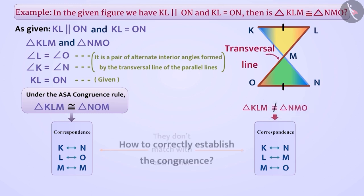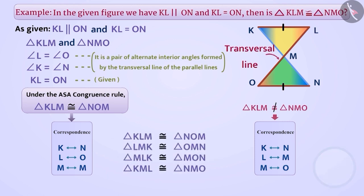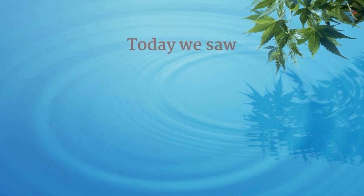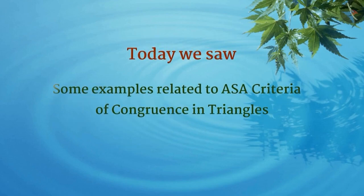Can you tell us how we can write the correct relation of congruence? Think for a while. Absolutely right — we can write it in any of the following ways. Try to establish the congruence in different ways. Today we saw some examples related to ASA criteria of congruence in triangles. In the next video, we will see some misconceptions related to them.